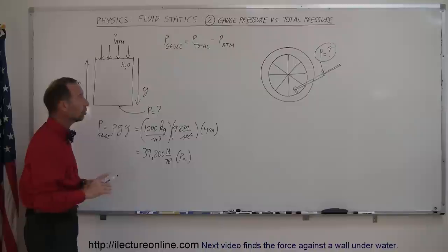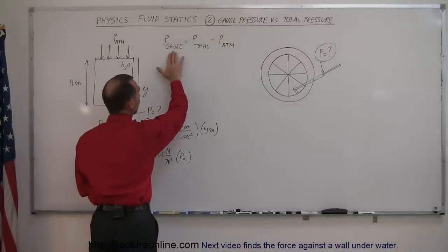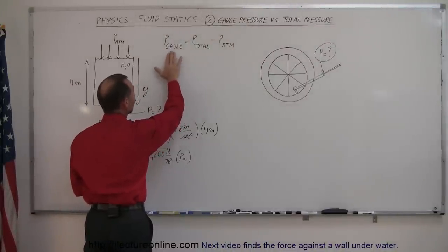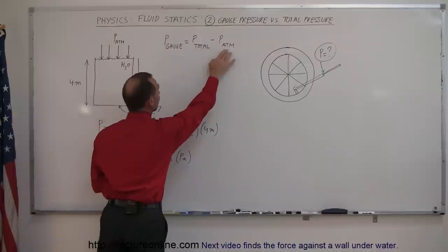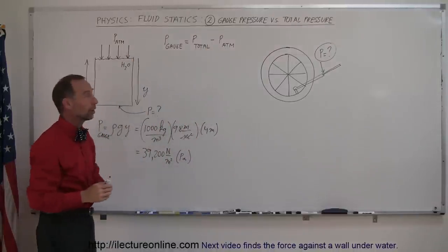And so, if we want to find the total pressure, right here, here's the relationship between gauge pressure and total pressure. Gauge pressure is the total pressure minus the atmospheric pressure, so we're only finding the pressure caused by the water.